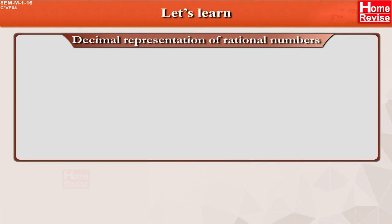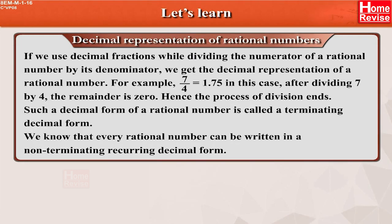Let us learn decimal representation of rational numbers. If we use decimal fractions while dividing the numerator of a rational number by its denominator, we get the decimal representation of a rational number. For example, 7 upon 4 is equal to 1.75. In this case, after dividing 7 by 4, the remainder is 0. Hence, the process of division ends. Such a decimal form is called a terminating decimal form.